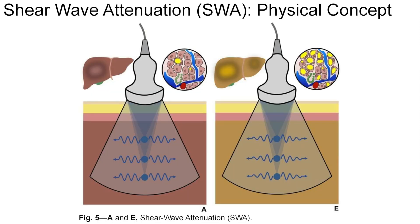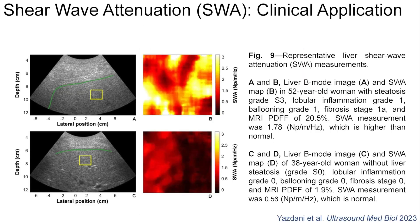Shear wave attenuation refers to the decrease in amplitude or intensity of shear waves as they propagate through tissue. Shear wave attenuation is increased in liver steatosis compared to normal liver. Fat in macrovesicular and microvesicular spaces within hepatocytes presumably adds a viscous or lossy component to the liver, thereby increasing the attenuation of shear waves. Shear wave attenuation measurements for the assessment of hepatic steatosis have been explored in a few studies, although to date no shear wave attenuation technique has direct commercial availability. Attenuation was higher in the patient with severe steatosis compared with the patient with no steatosis.